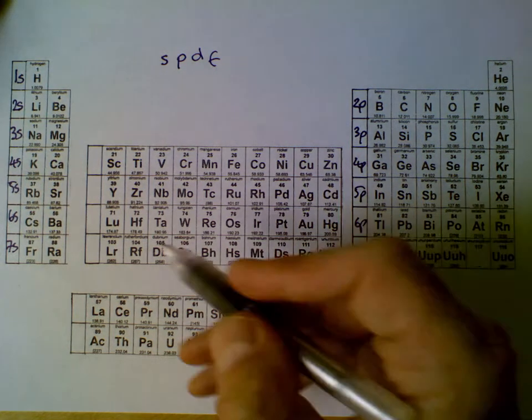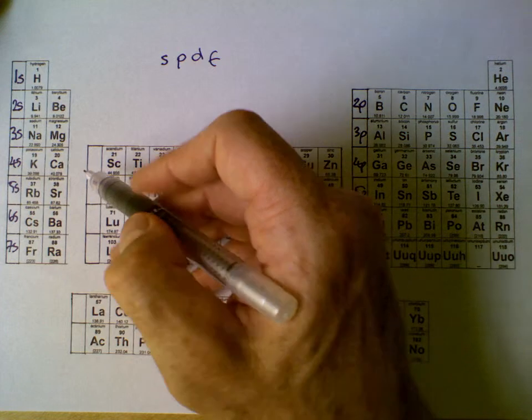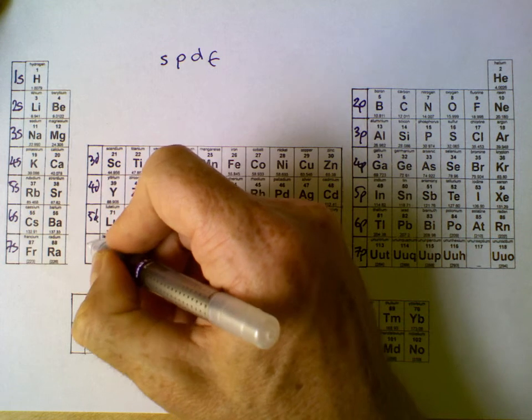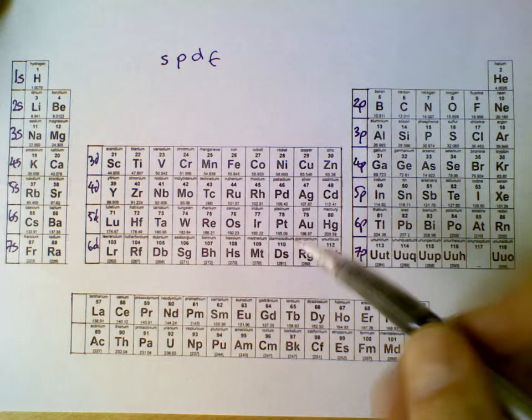The next column are the D's and they start with 3. 3D, 4D, 5D, 6D. Hopefully you're noticing a pattern.